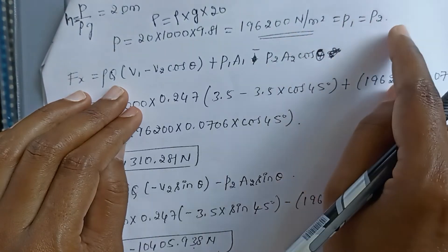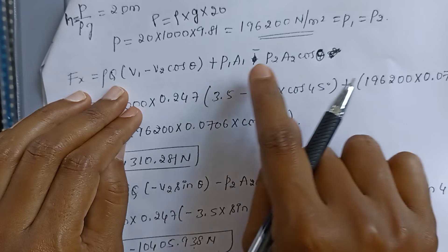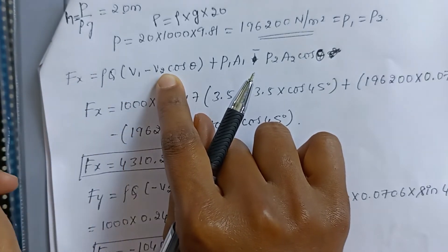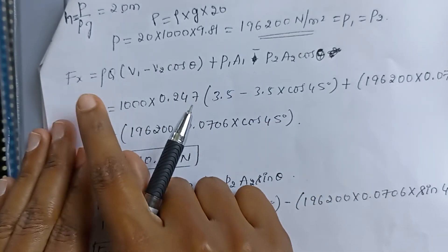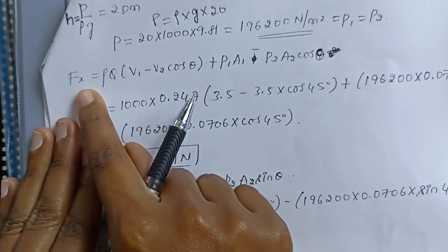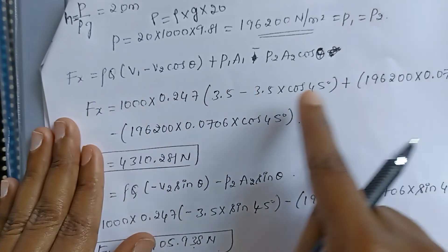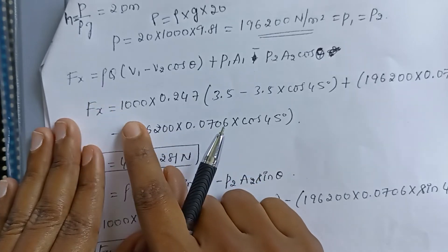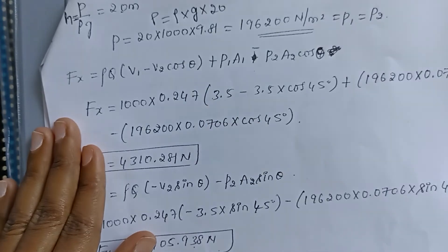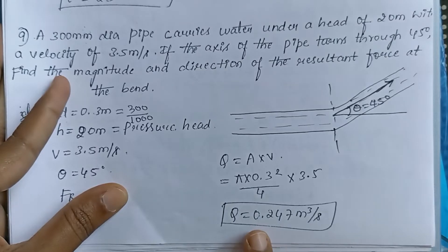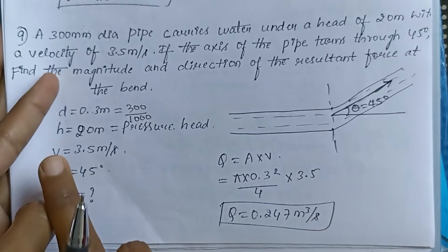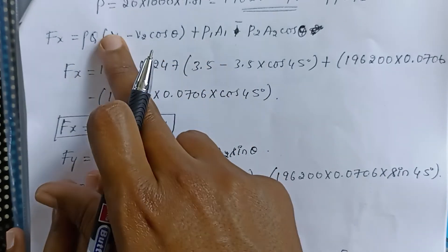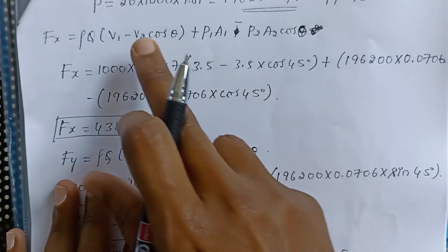Now let us write and substitute values into the Fx equation. Rho = 1000 kg/m³, Q = 0.247 m³/s, v1 = v2 = 3.5 m/s, theta = 45°. The area A1 = A2 = pi × (0.3)² / 4 = 0.0706 m². So the first term is 1000 × 0.247 × (3.5 − 3.5 cos 45°).